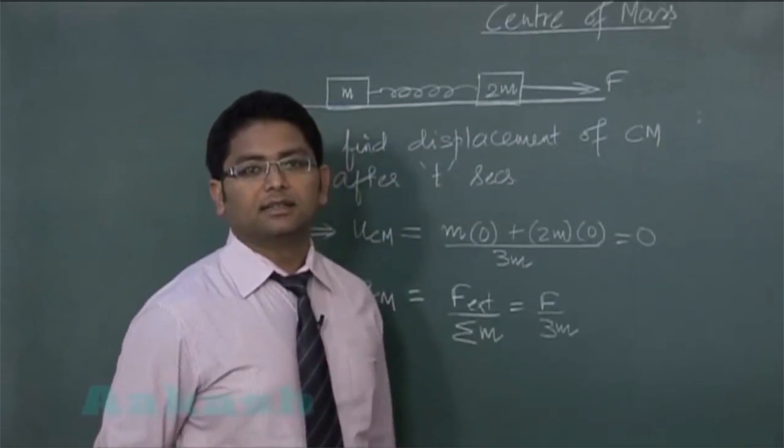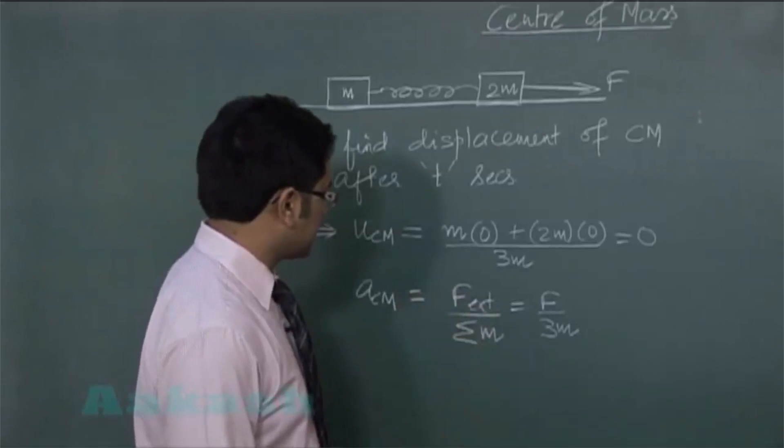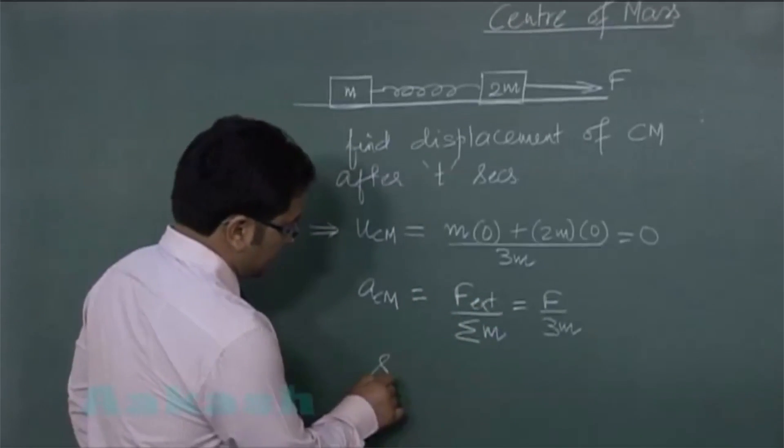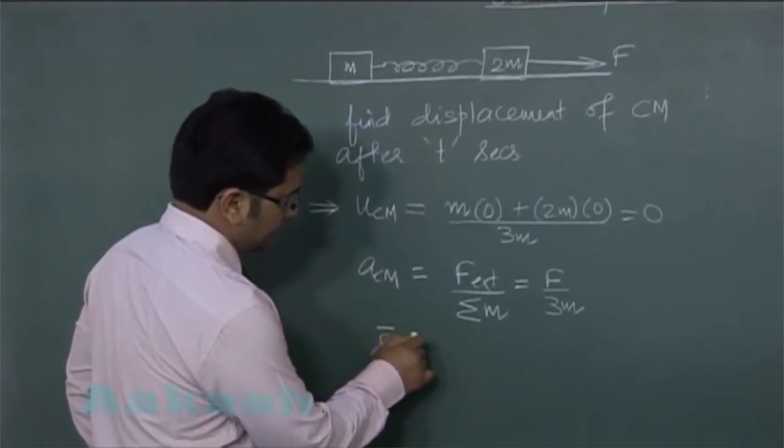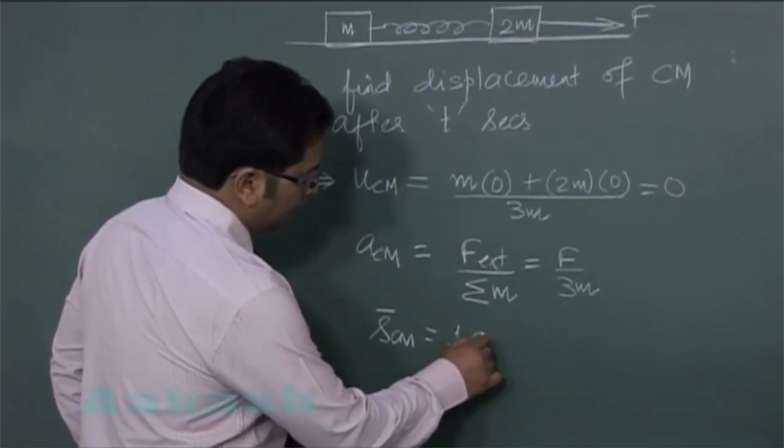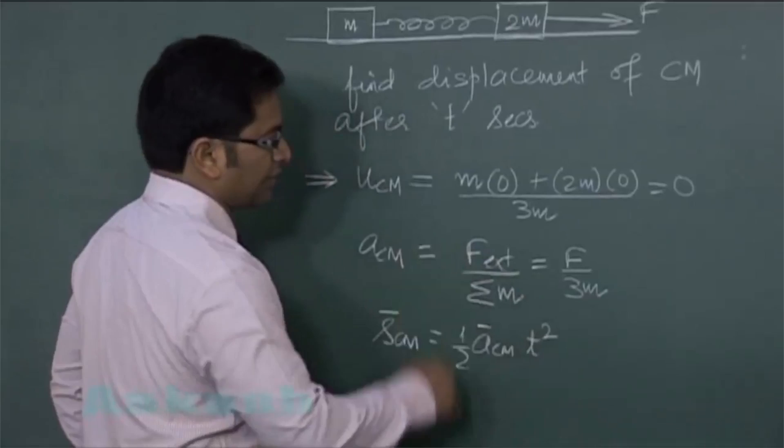Now it's very clear initial speed is 0, acceleration is this much. I can write displacement of center of mass will be one half a cm multiplied by t square.